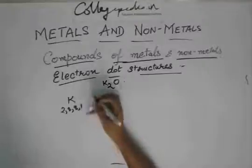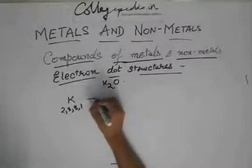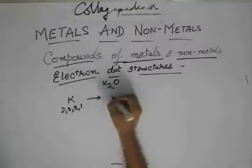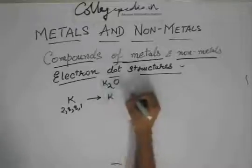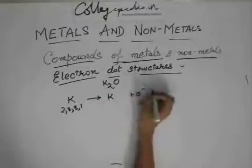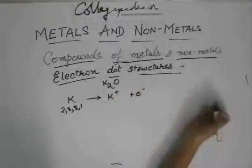So one electron it will lose, and because it loses one electron there has to be one positive charge, so it becomes K+.